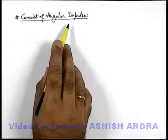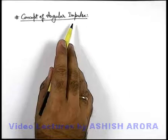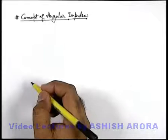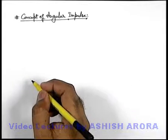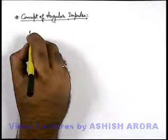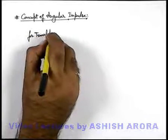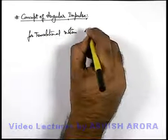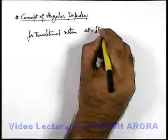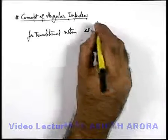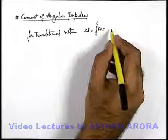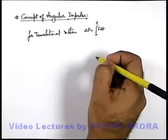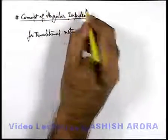Now we'll discuss the concept of angular impulse. Impulse is a term which you are already familiar with, which we have studied at the time of conservation of linear momentum. For translational motion, the total change in linear momentum can be given by impulse — the integration of F dt from zero to t if force is varying with time, and F into delta t if force is constant. Similarly, we are going to talk about angular impulse.